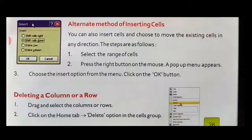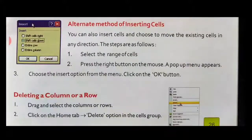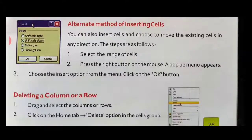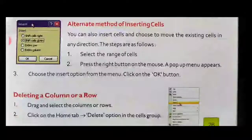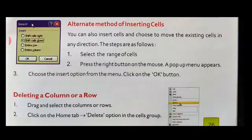Next is deleting a column and row. First, drag and select the column or row you want to delete. Second, click on the Home tab and click the Delete option in the Cells group. Once you click Delete, the selected row or column will be deleted.